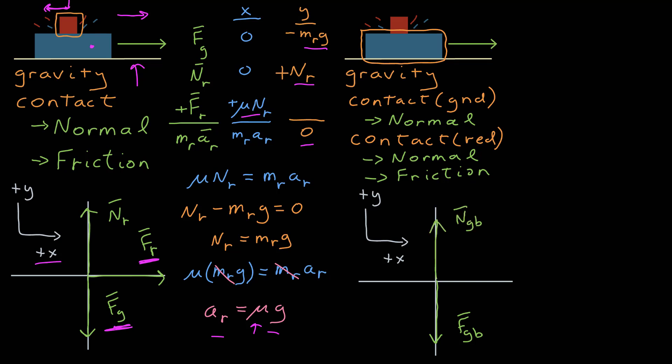There's a normal force of the ground on blue, and that points up because the ground is the agent and blue is the object. I've added blue subscripts to my forces here so I can keep them separate from the forces I had before.